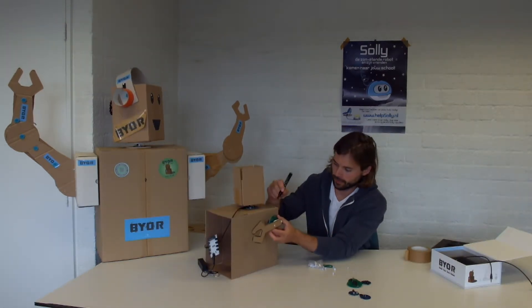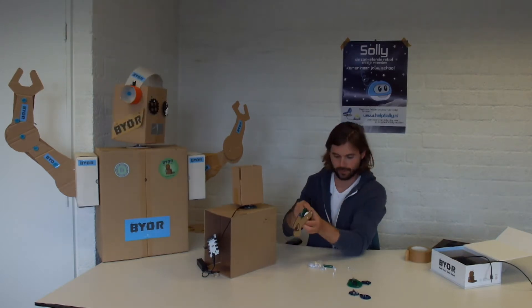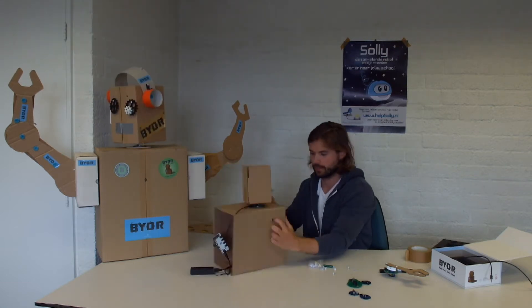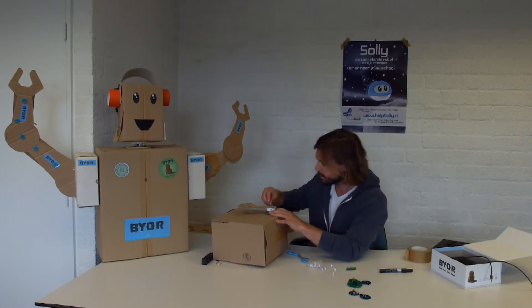Next we're going to attach the arm. First we're going to mark where the motor sticks out of the board. We're going to make a hole exactly the same size. Let the motor fall into that hole and then we're going to use the puncture pen and the split pens again to secure the motor.